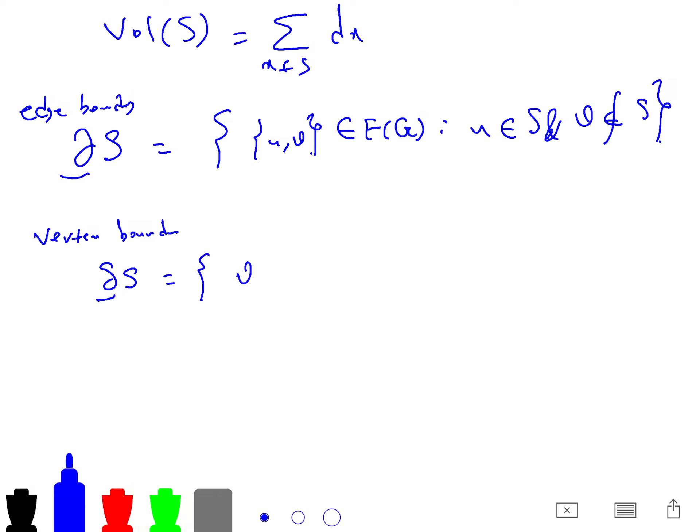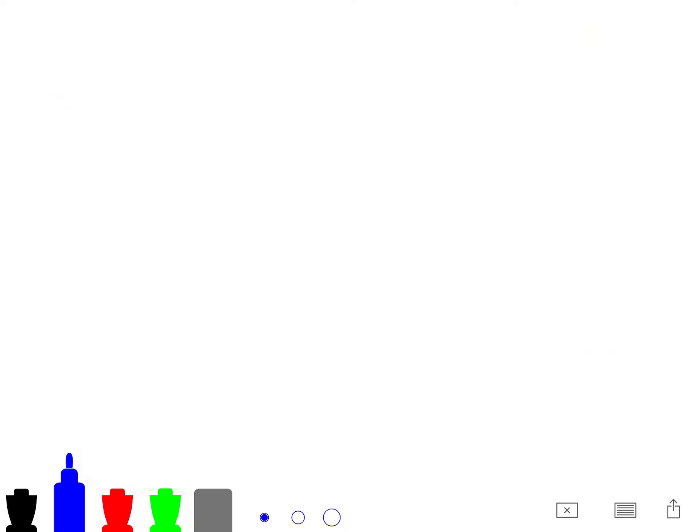that one vertex is in S and the other vertex is not in S. And the vertex boundary is, we call it delta(S). Instead of this, we call it delta(S). And it is V that are outside S, but (U,V) is an edge, and U is in S. So from this, you go out, number of edges. From this, you count these vertices that are out. But they should have an edge that goes inside.